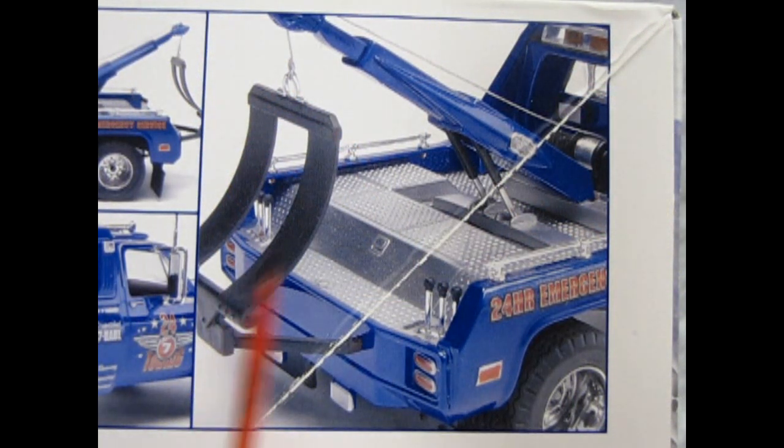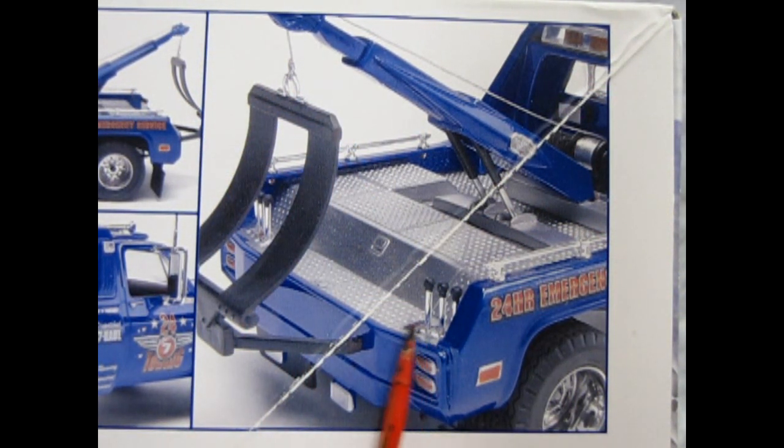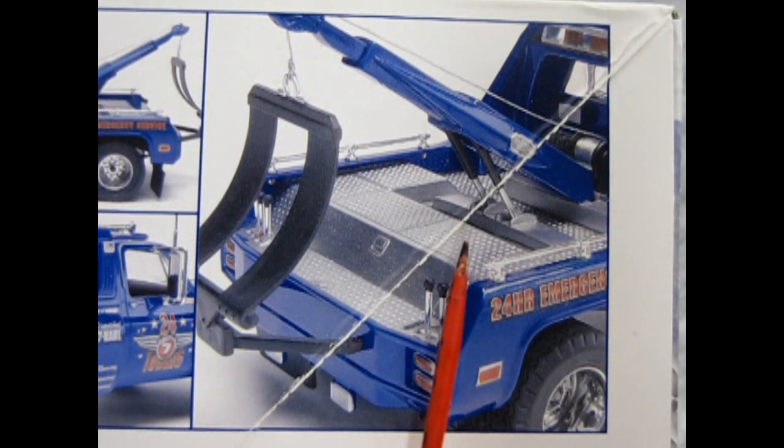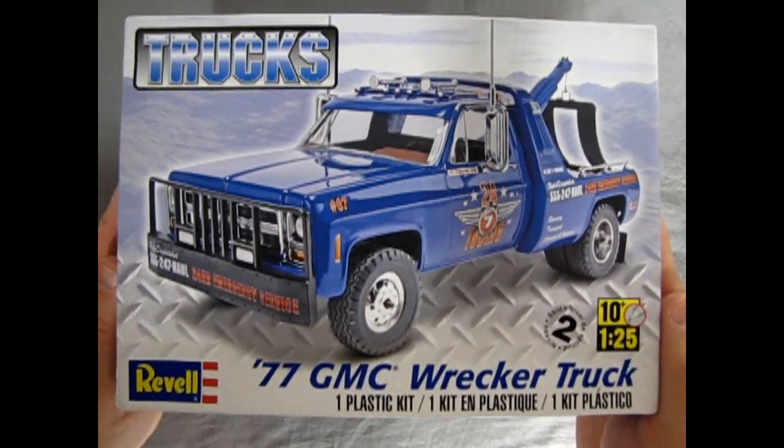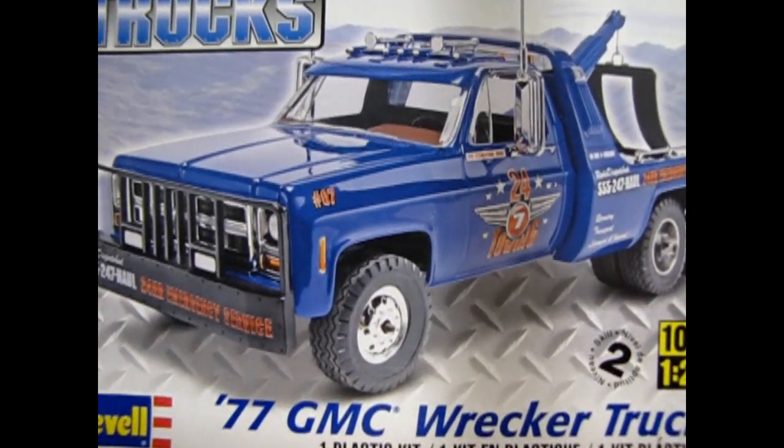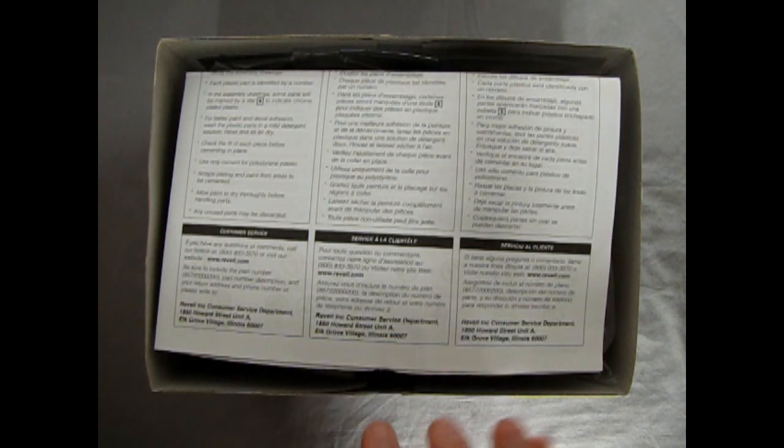And here once again we've got that amazing tow rig and as you can see there are the controls down here on the back of the bed as well as a textured plate. And now let's take the lid off our 77 GMC Wrecker pickup truck, a skill level 2 kit for ages 10 and up in 1/25th scale.